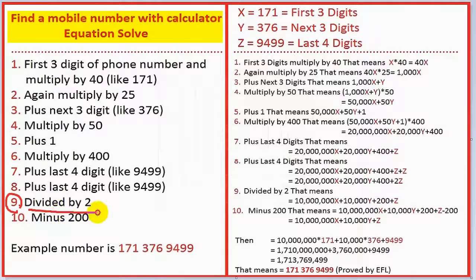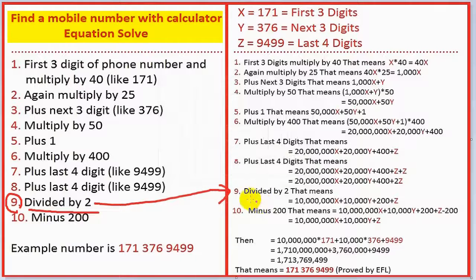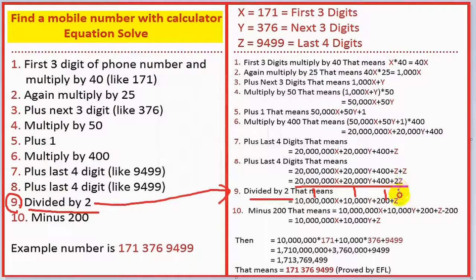This is your turn — keep this in mind. Step nine: divided by two. The result divided by two gives you the value here.